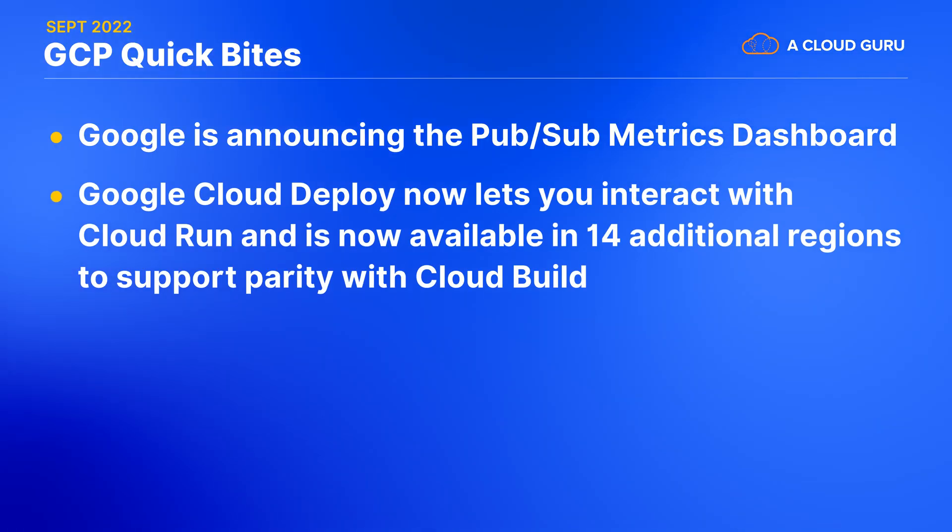Google Cloud Deploy now lets you interact with Cloud Run and is now available in 14 additional regions to support parity with Cloud Build. Google Cloud Deploy allows you to automate the delivery of your applications to targets within Google Cloud. You can run Google Cloud Deploy to deploy your containers targeting Cloud Run, and you can target services directly in your YAML file. To support parity with Cloud Build, you now have 14 additional regions you can run Google Cloud Deploy in.